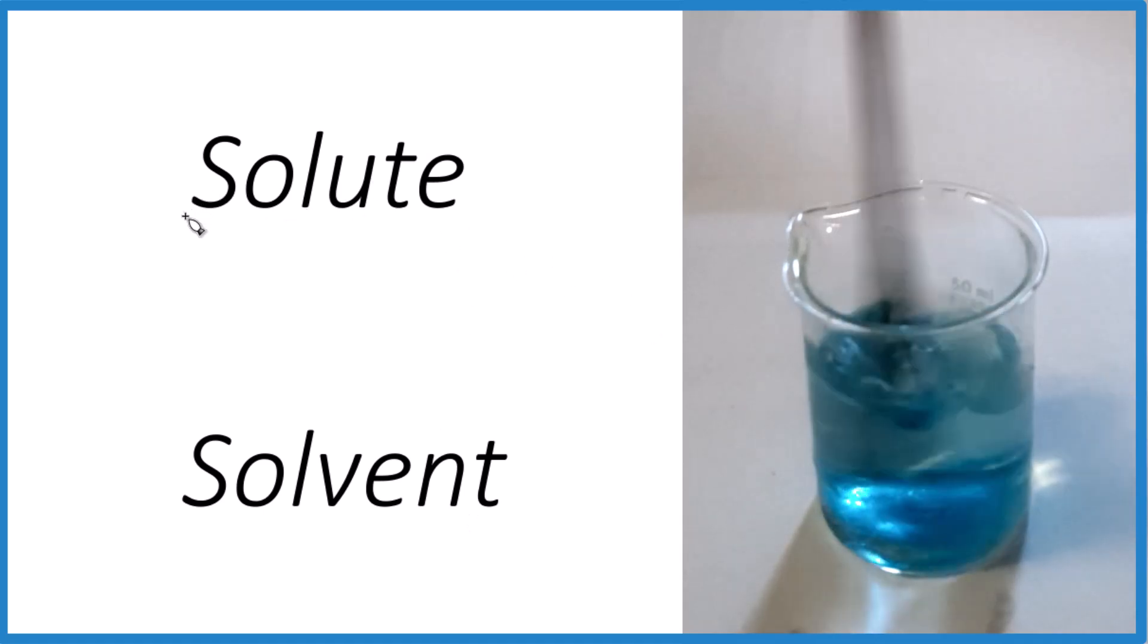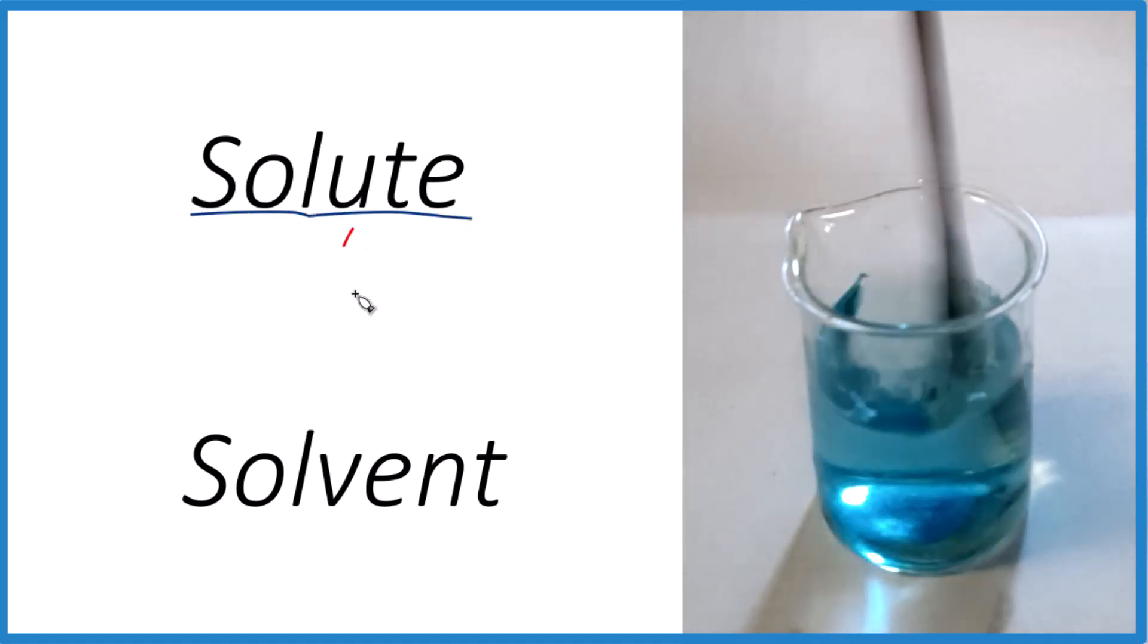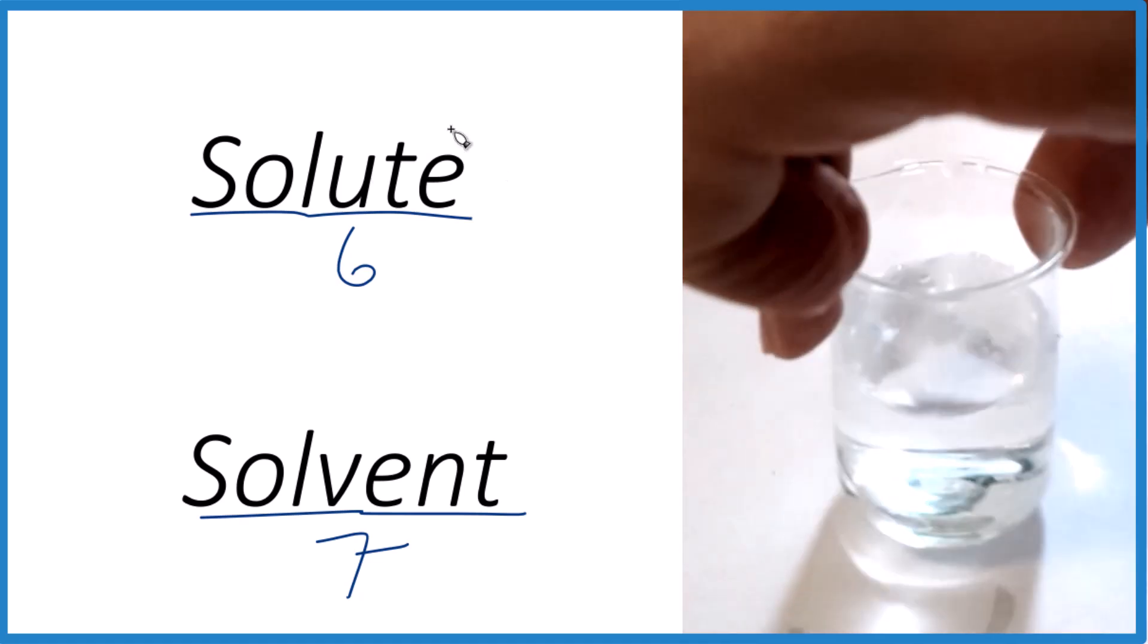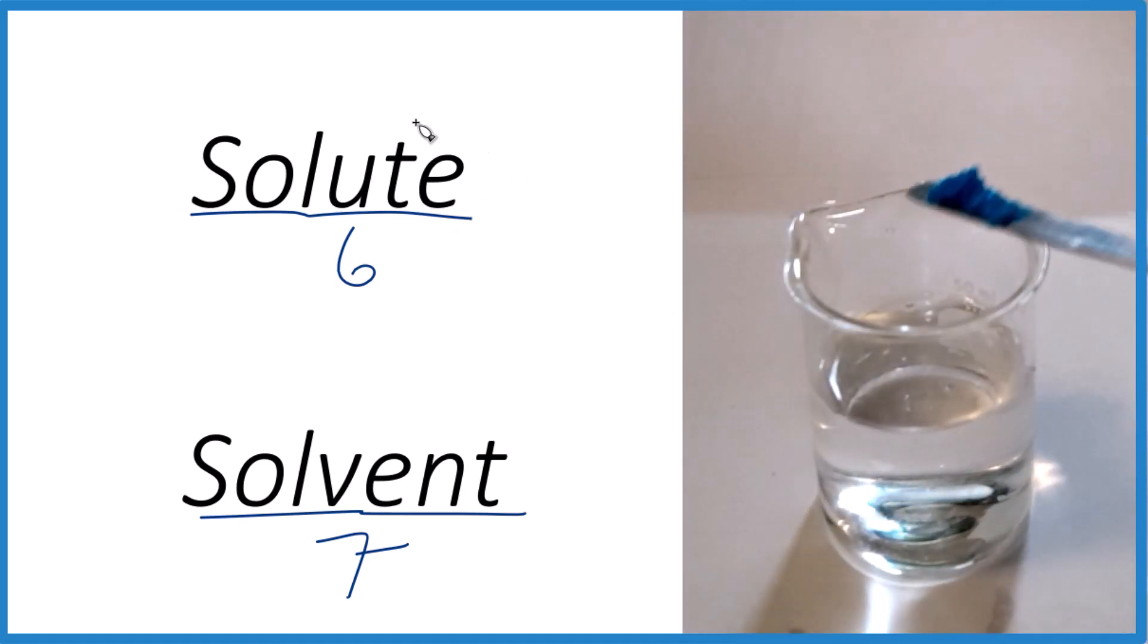The way I remember it is solute has six letters and solvent has seven letters, so this is the one we have less of. When we're making these solutions, typically we have less of the solid—that's the solute.